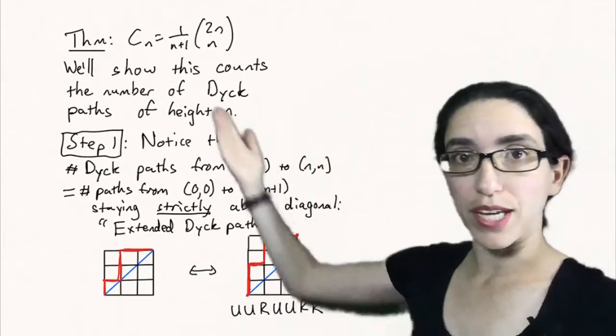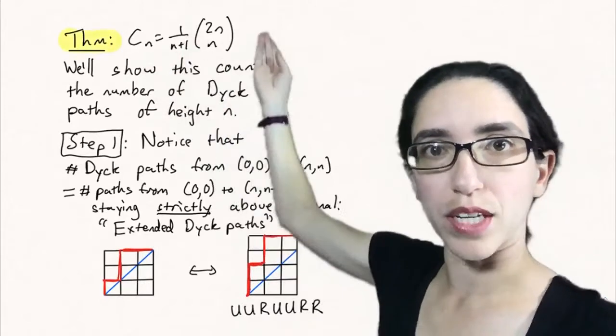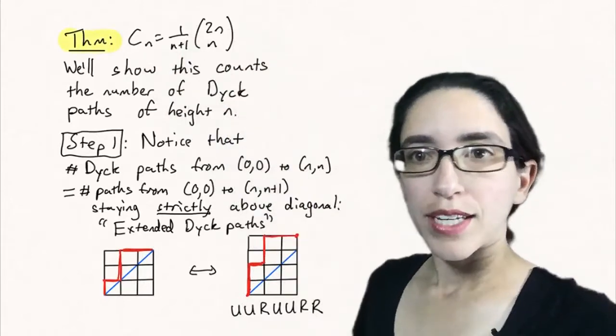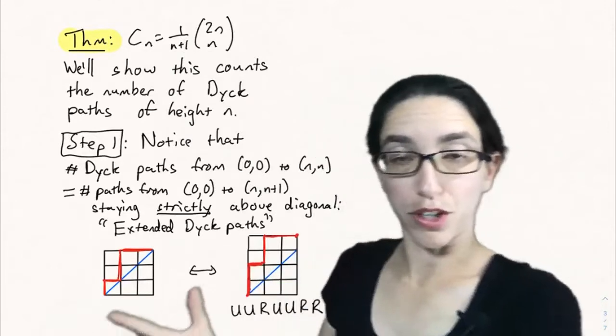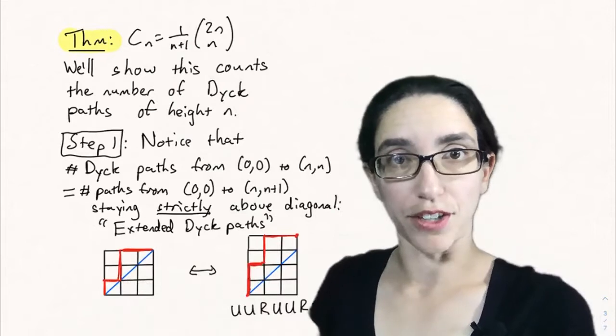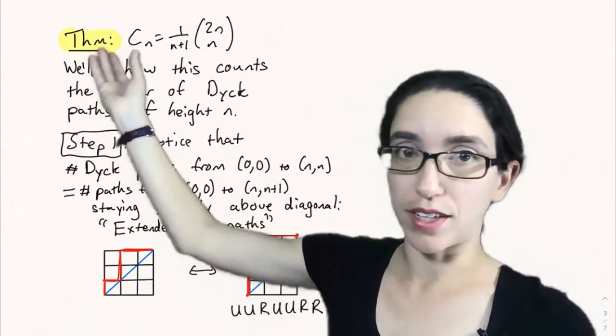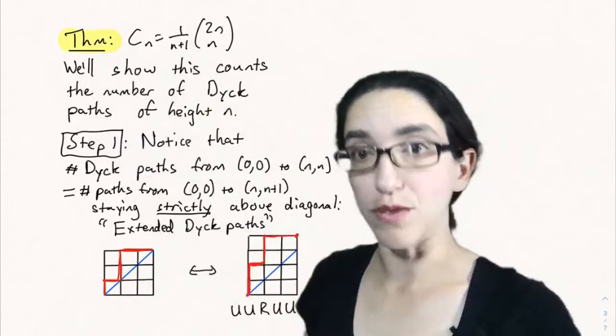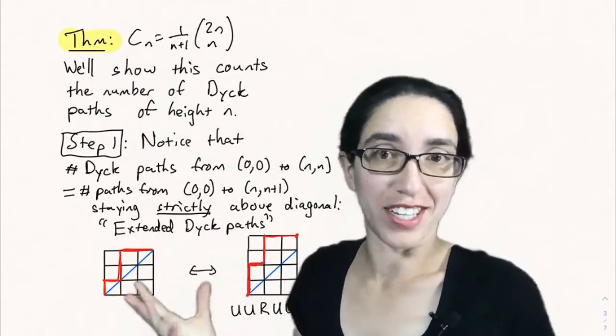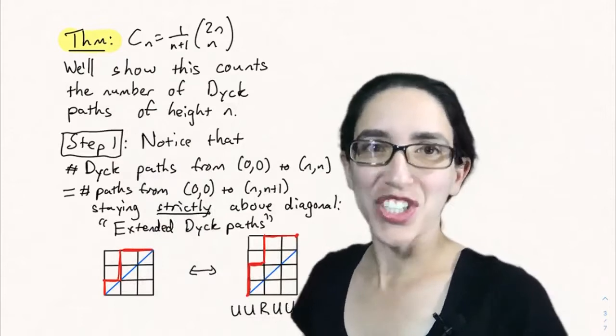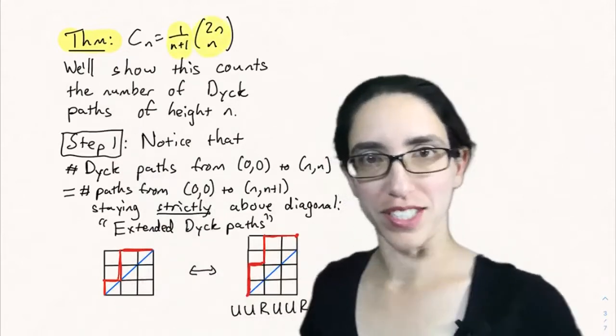The theorem is that C sub n is 1 over n plus 1 times 2n choose n. Now what we've done with previous formulas, like for the Fibonacci numbers, is plug them into the recursion and show that it satisfies that recursion. That's actually very difficult to do using this formula and that gigantic recursion. You get something that's just as hard as trying to prove this directly.